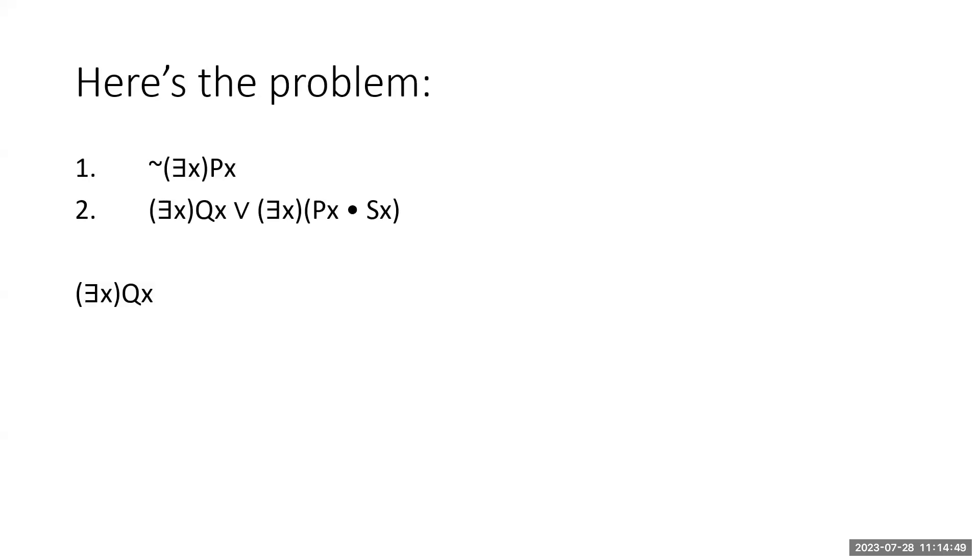Now, look at that for a second. Do you see the conclusion hidden anywhere inside the premises? Answer, yes, you do. The conclusion is one of the disjuncts, the first disjunct of premise two.